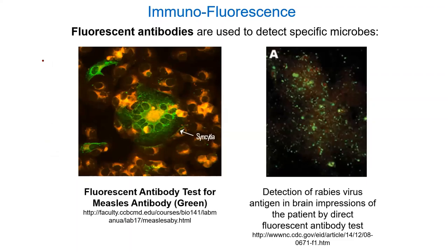Here's another one looking for the measles antibody. Sometimes we're not detecting the virus or bacterium directly — sometimes we're looking for whether somebody's body made an immune response. In this case, a person is testing for whether they had an immune response against measles, so we're detecting human antibodies. There's another one on the right looking for rabies virus. These viruses can't be seen with a light microscope, but we can stain them with fluorescent antibodies so we can read a signal.